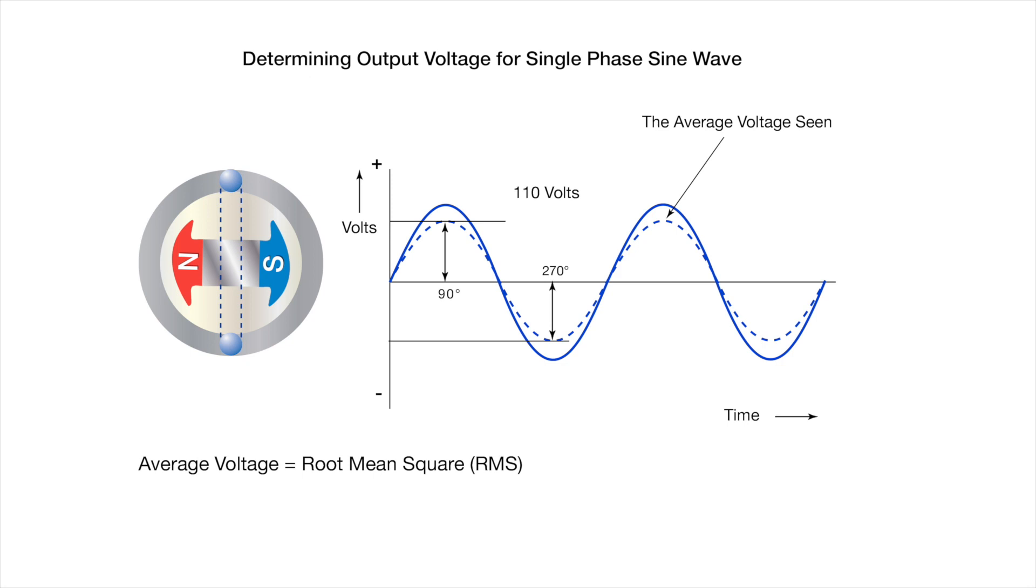At 270 degrees, the RMS value of the negative peak voltage is generated at 110 volts when measured from the neutral to line two. The voltage measured from line one to line two is 220 volts.